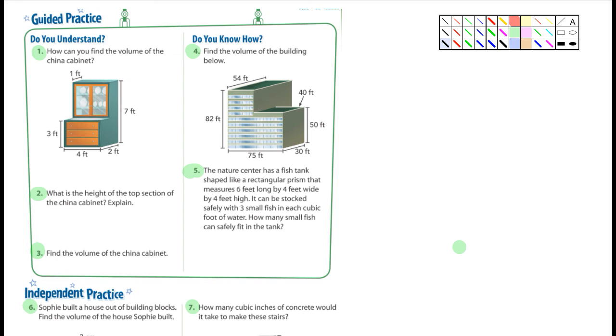Now, look at this one for a moment. Number one, somebody asked me about this. How can you find the volume of the china cabinet? Okay. Well, length times width times height. And number two, somebody asked me about that. Number two says, what is the height of the top section of the china cabinet? Well, look. What's the top section? It's right here. This is the top section. So, if from here to here is seven, what would it be from here to here? Well, if this is three, this is also three. Three from seven, it's going to be four, this distance right here.